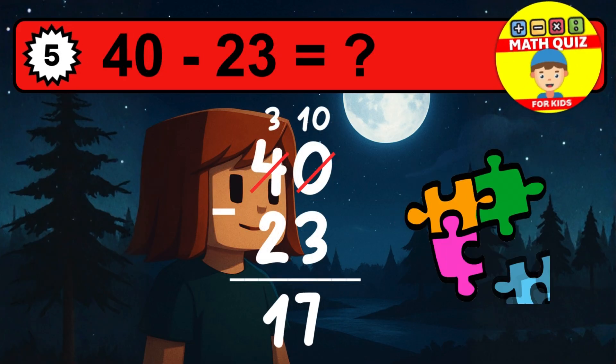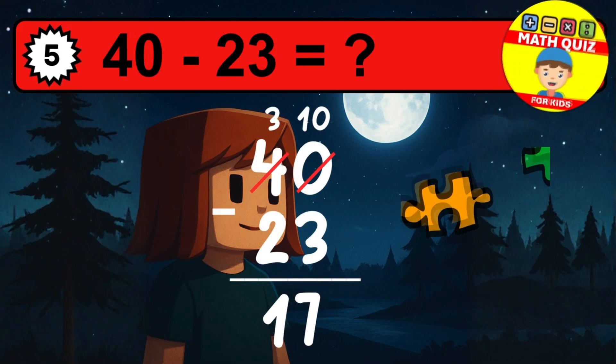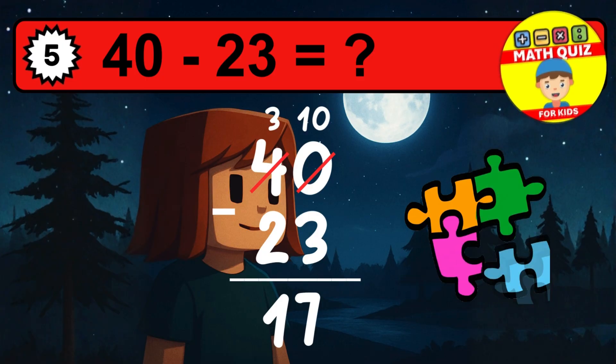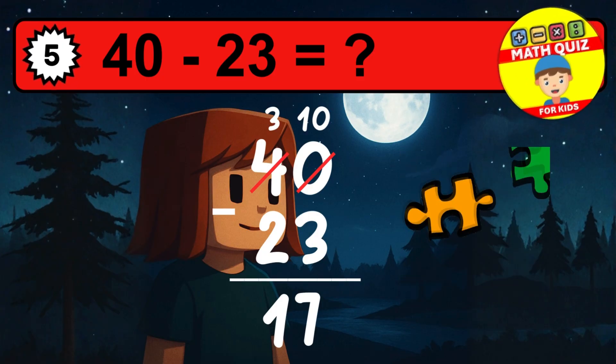Then we go to the tens. Three minus two is one. The final answer is seventeen.